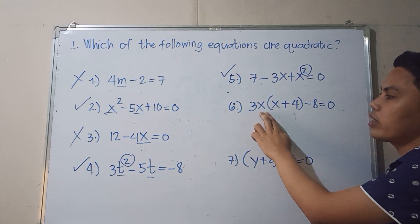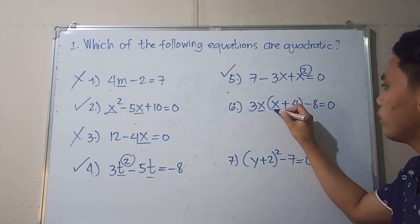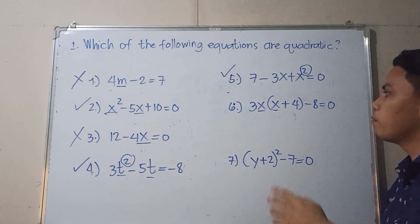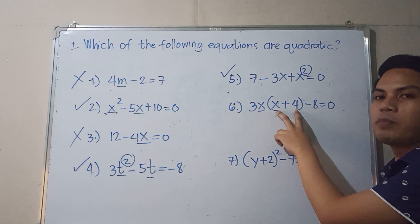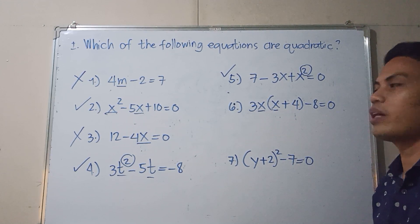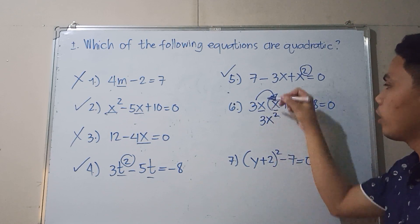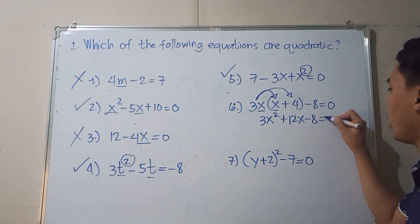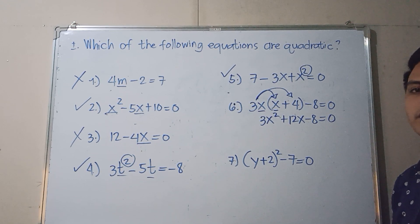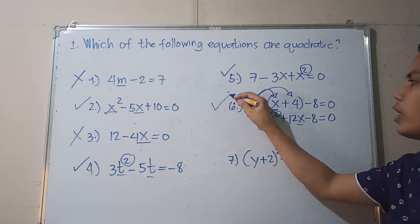How about number 6? We have 3x times the quantity x plus 4, minus 8, is equal to 0. Looking at x, the highest degree is 1 at first glance. However, there is a multiplication operation here, so we need to distribute 3x inside the parentheses. 3x times x equals 3x squared, and 3x times positive 4 equals 12x. Copying minus 8 equals 0. Now the variable x has a highest degree of 2. Therefore, number 6 is a quadratic equation.